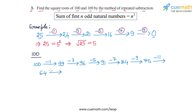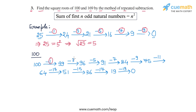Then we subtract 13, and that gives us 51. Then we subtract 15, that gives us 36. Then we subtract 17, that gives us 19. And finally, we subtract 19, and that gives us 0. So how many odd natural numbers did we subtract? We subtracted 1, 2, 3, 4, 5, 6, 7, 8, 9, and 10 — so in all, we subtracted the first 10 odd natural numbers from 100, and that gave us 0 at the end.